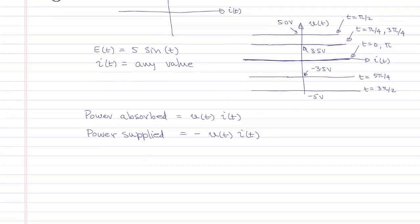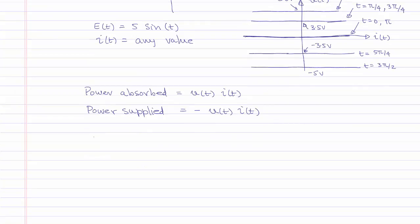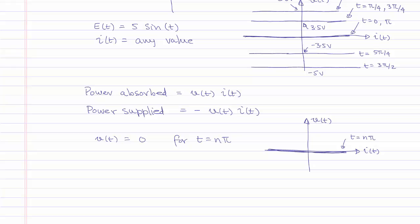Note that for the sinusoidal source, the value of V of t equals 0 when t equals n pi, and the characteristic coincides with the x-axis. This is the same characteristic as a resistor of value 0. Thus, a voltage source of value 0 is the same as a short circuit, and we will use this property later in this course.